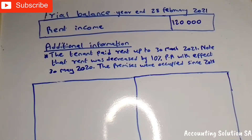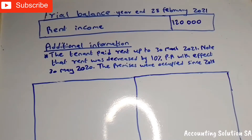Our financial year started on 1 March 2020. The rental income amount given is R120,000. The additional information states that the tenant paid rent up to 30 March 2021, and note that the rent was decreased by 10% per annum with effect from 30 May 2020. The premises has been occupied since 2018.